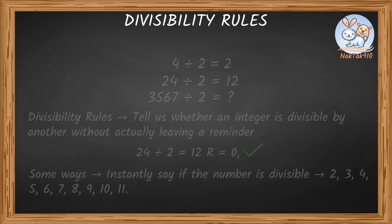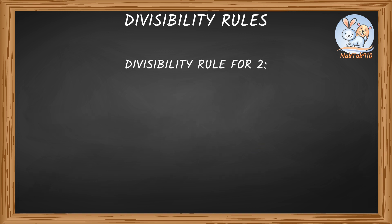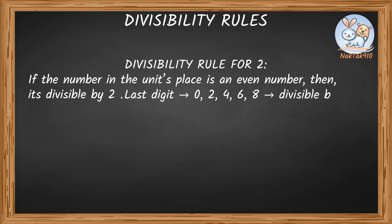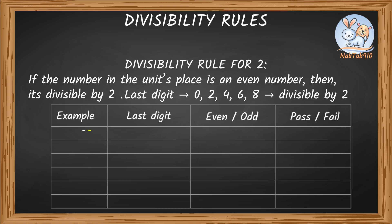Let's look at the divisibility rule for 2. If the number in the unit's place is an even number, then it's divisible by 2. So if the last digit is either 0, 2, 4, 6, or 8, then it's divisible by 2. For example, 32 — the last digit is 2, so 32 is divisible by 2.